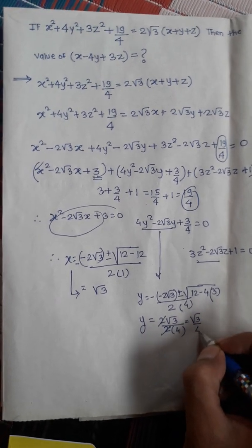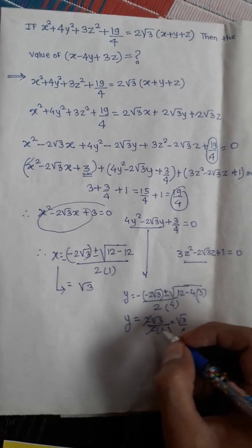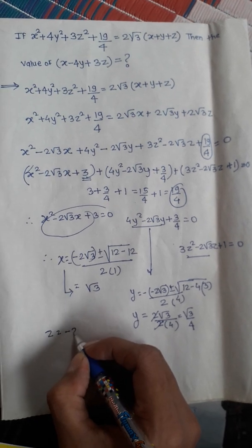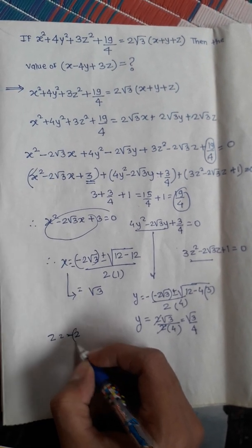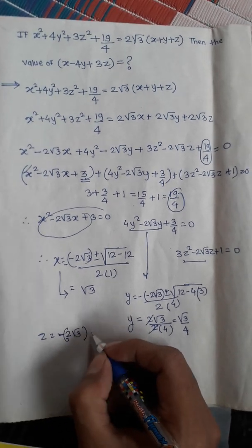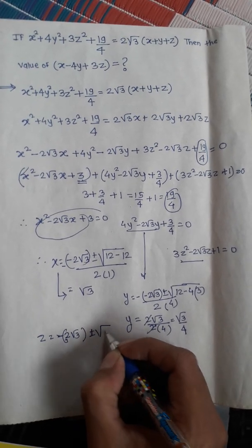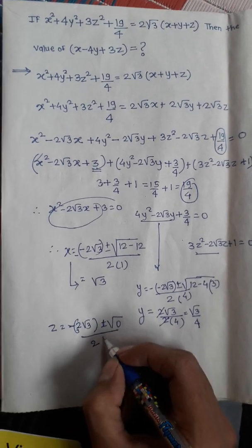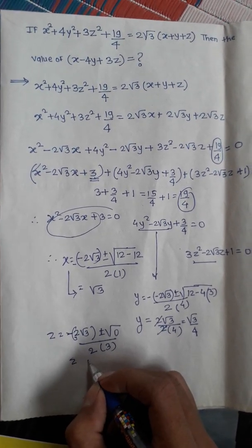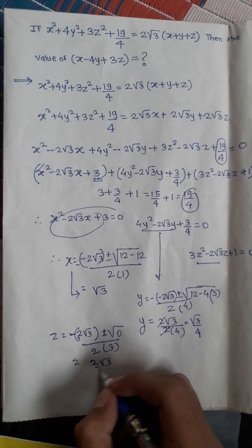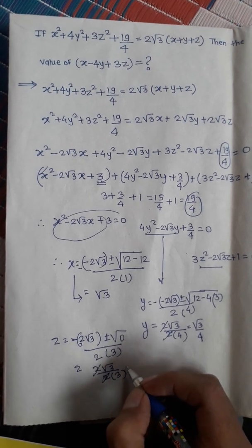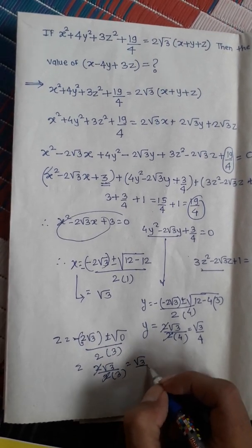For z: discriminant = (2√3)² - 4·3·1 = 12 - 12 = 0, so z = 2√3 / (2·3) = √3/3.